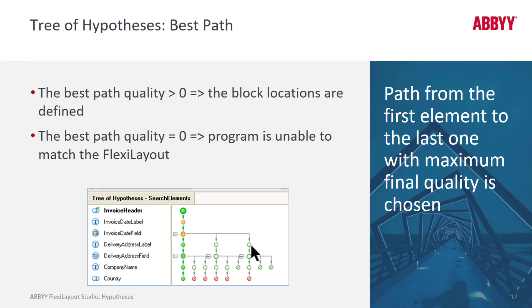This branching can take extra time for the Flexi Layout to execute. A 'nearest to' function setting could eliminate that delivery address branching, or you could provide more specific criteria that could be added to that paragraph element. If branching can't be eliminated, you may wish to place those items that branch at the bottom of your element tree.